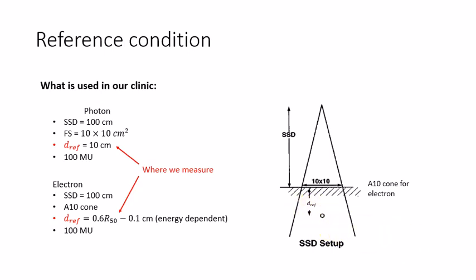Depending on the types of beam, dref is different. For example, we place the chamber at 10 cm underwater surface for all the photon beams, no matter it is 6 MV, 10 MV, or 18 MV.